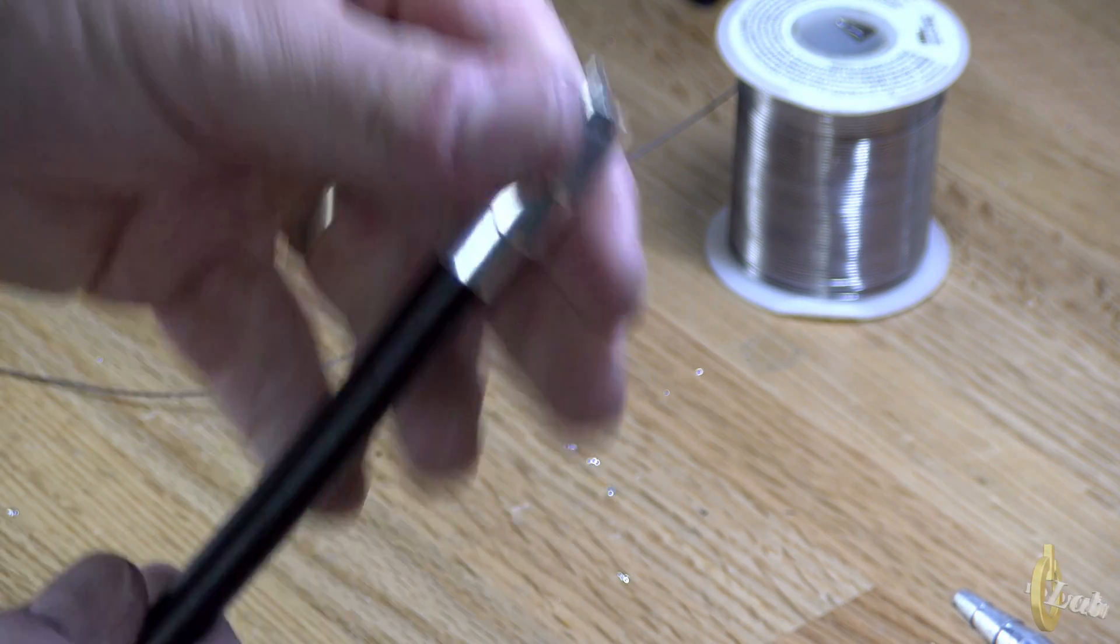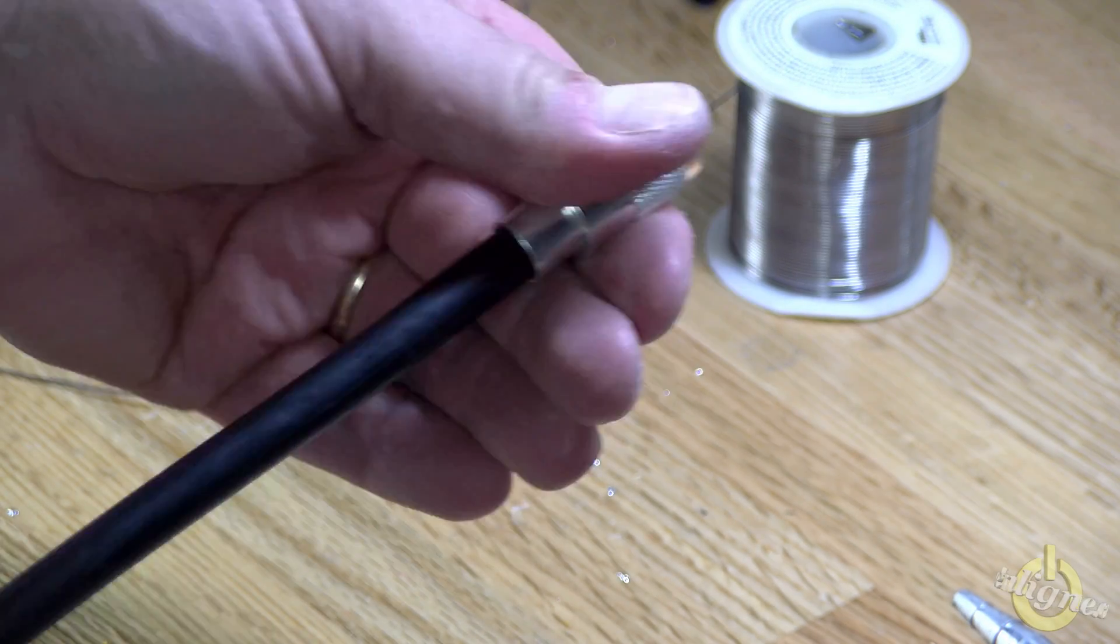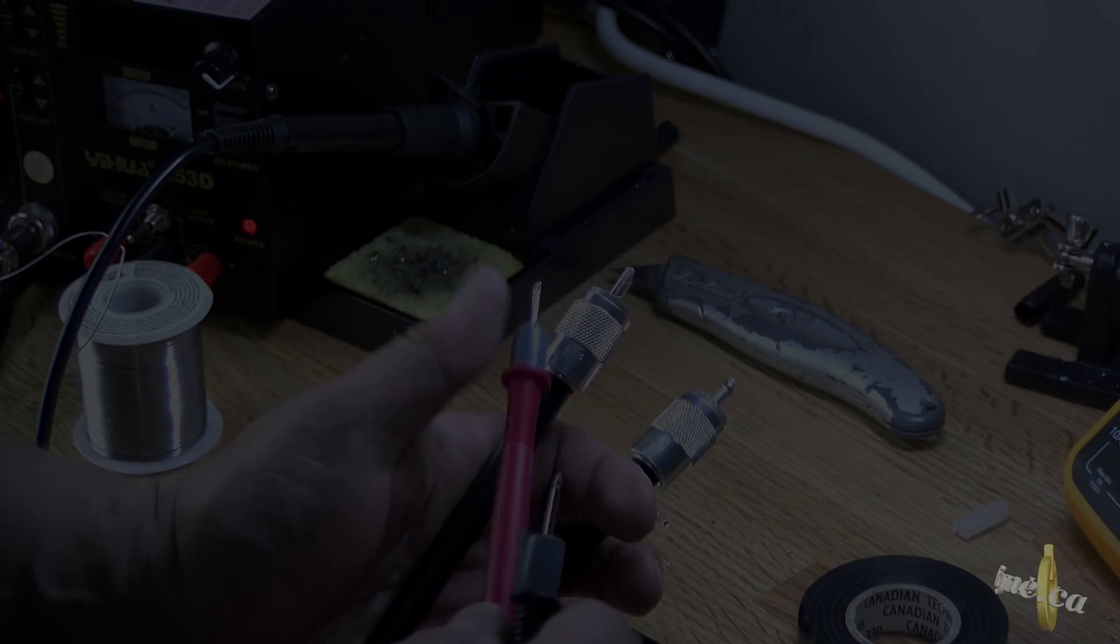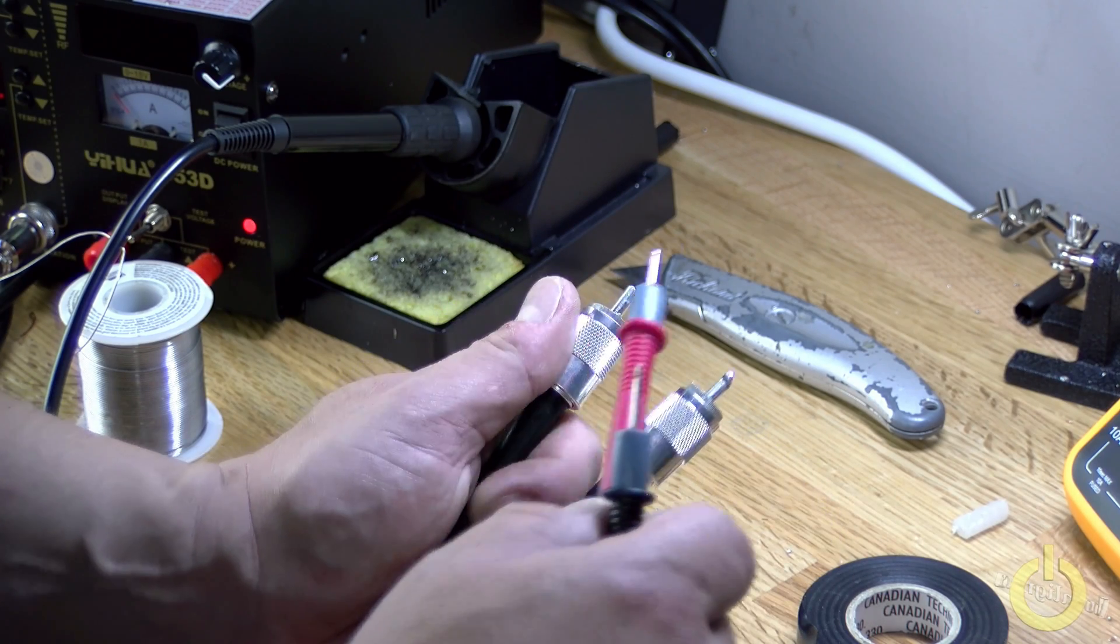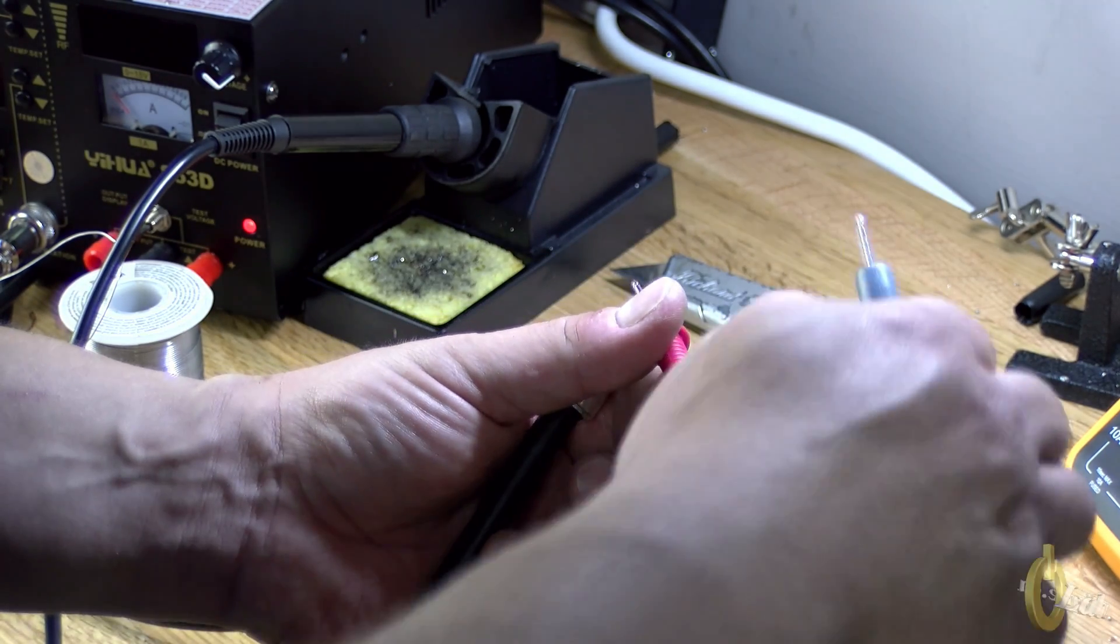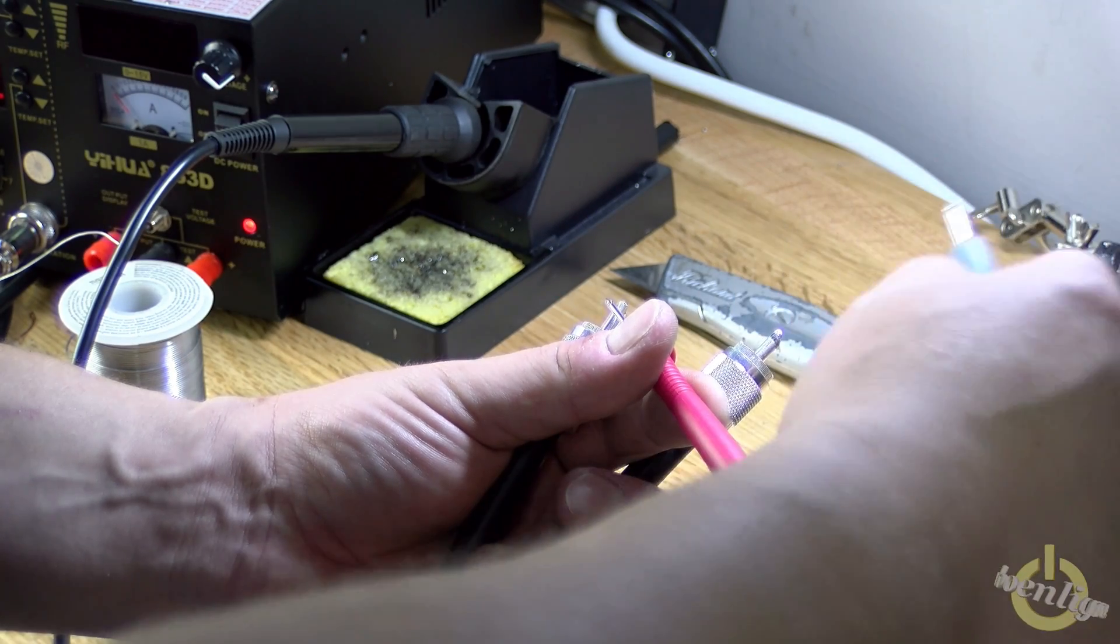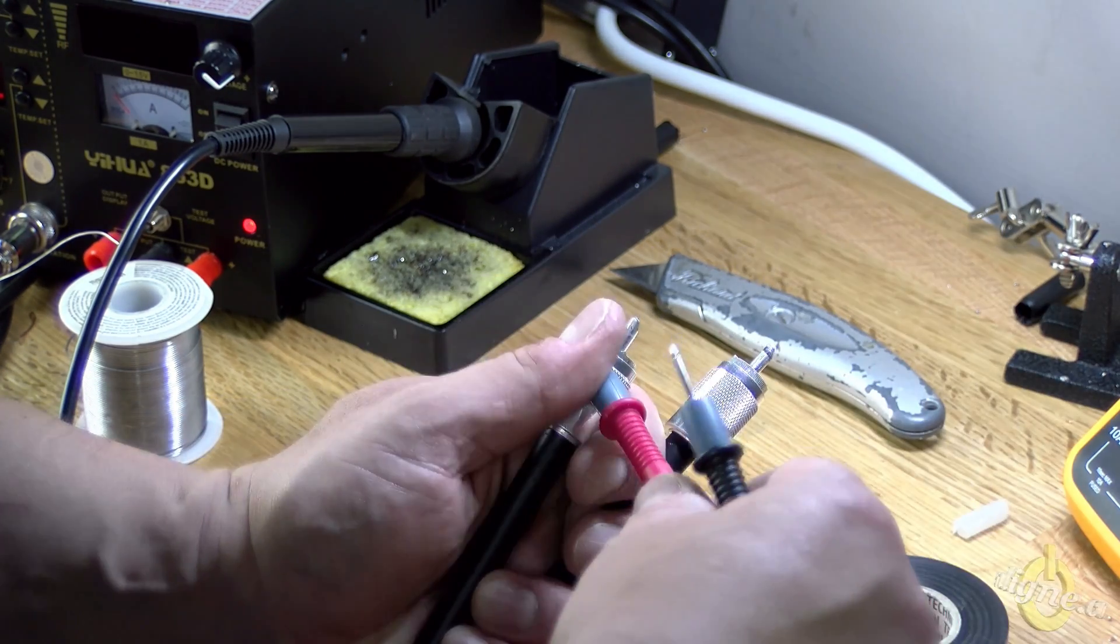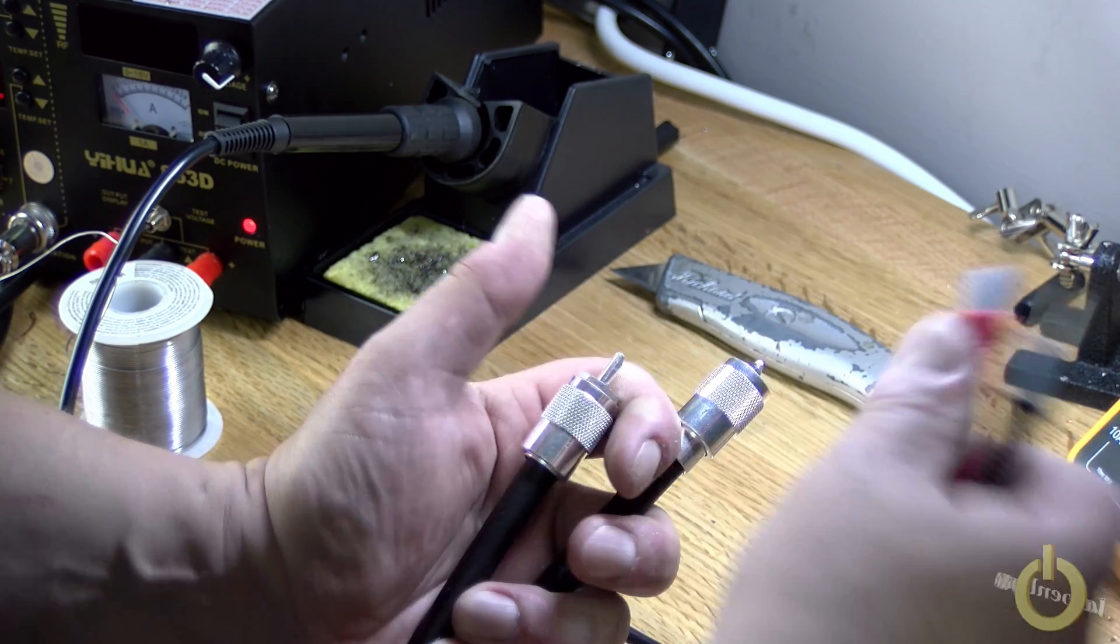As you can see, it's very solid. So now I measure, make sure I have a continuity on the shield and a continuity on the center wire as well. And make sure you don't have a short between the center and the shield and you're done. You do it when both ends are done. So hope you did enjoy, 73.